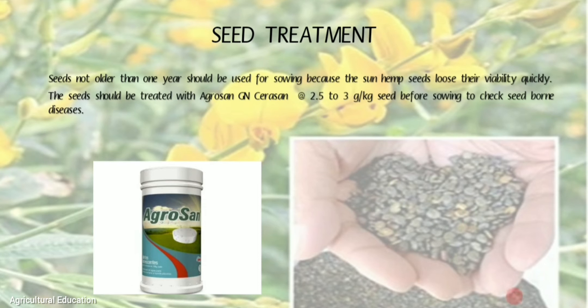Seed Treatment: Seeds not older than one year should be used for sowing, because sunhemp seeds lose their viability quickly. The seeds should be treated with Agro-sun or Seric-sun at the rate of 2.5–3 kg per seed before sowing, to check seed-borne diseases.